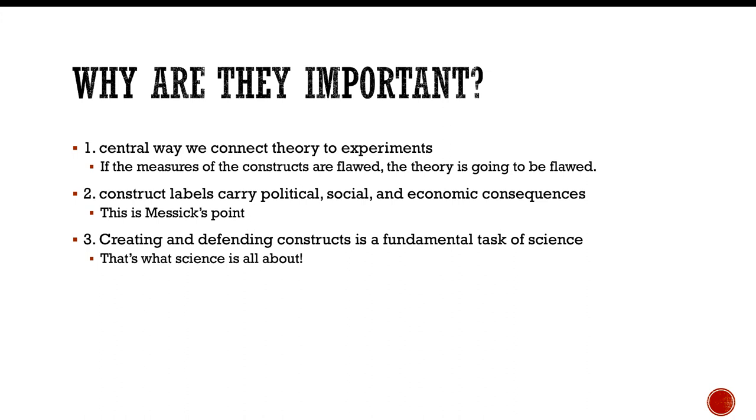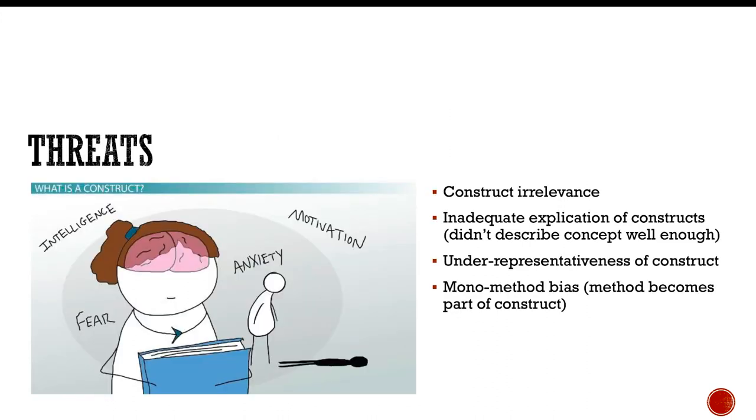So construct validity is concerned with understanding these constructs as well as measuring them. So why are they important? Well, constructs are the central way we connect theory to experiments. So if the measures of the constructs are flawed, the theory is going to be flawed as well. Two, they're important because construct labels carry important political, social, and economic consequences. And by the way, this is Messick's point. Number three, creating and defending constructs is a fundamental task of science. That is exactly what science is all about.